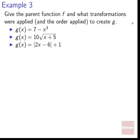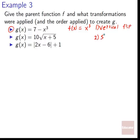Now give the parent function f and transformations that create g. First: g(x) = 7 − x³. Parent function is f(x) = x³. What happened? First a vertical flip gives −x³, then shift up by 7 gives −x³ + 7, which is 7 − x³.